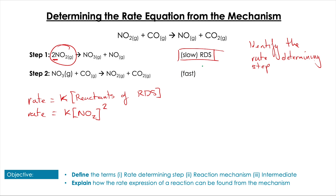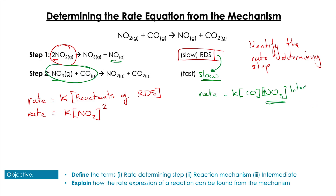What if the rate determining step was the second equation? We still use rate equals K times the reactants of the rate determining step, so initially rate equals K[CO][NO3]. However, NO3 does not appear in the overall reaction — it's produced in step one and used in step two, making it an intermediate, which is not allowed in the rate equation. So we go back to find where NO3 was made, look at the reactants of that equation — which requires NO2 squared — and replace the intermediate with those reactants from the first reaction.